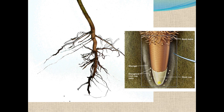Through these root hairs, the water and minerals are absorbed by the plant. This is the tip of the root. This tip of the root has cells which divide and re-divide continuously and increase the length of the root. This tip of the root is protected by a cap called root cap, and in this picture you can see these void granules — this is the root cap, which protects the tip of the root.